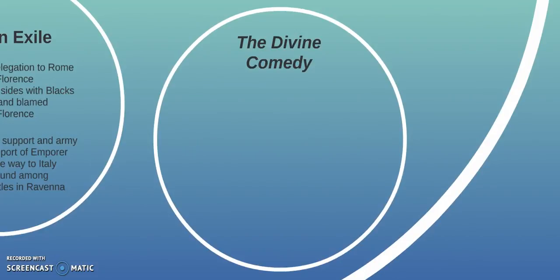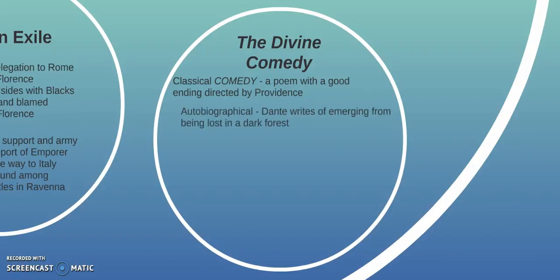Out of this, Dante starts writing. He writes a three-volume piece of literature: Hell, Purgatory, and Paradise, or Heaven — called The Divine Comedy. The idea of a comedy is not what we think of today as something funny. Classically, a comedy was a poem with a good ending, generally directed by Providence, and it's usually written in the native language rather than in Latin.